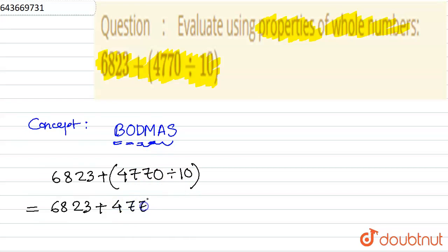Now multiplication is not there, then comes addition. So addition is there, so we'll add 6823 + 477. The answer comes out to be 7300. So this is the required solution to this question. Thank you for listening.